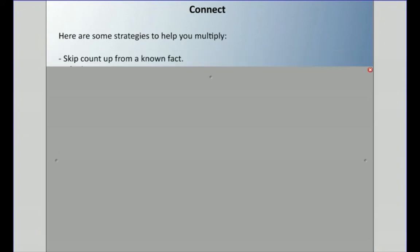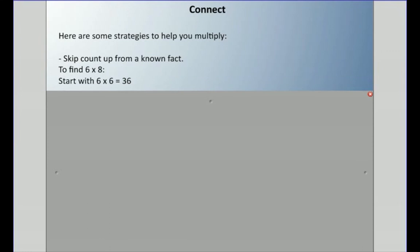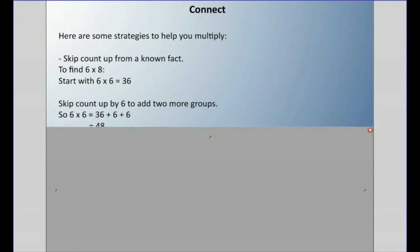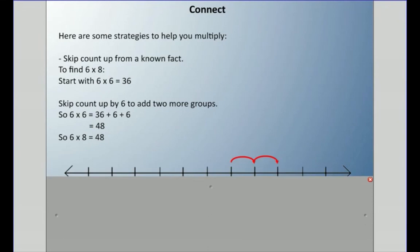You could do something called skip counting up from a known fact. To find six times eight, maybe start with something you know, like six times six equals 36. You can count up by sixes to get two more groups of six. So if I know six times six is 36, I could add two more sixes, which equals 48. So six times eight is 48.